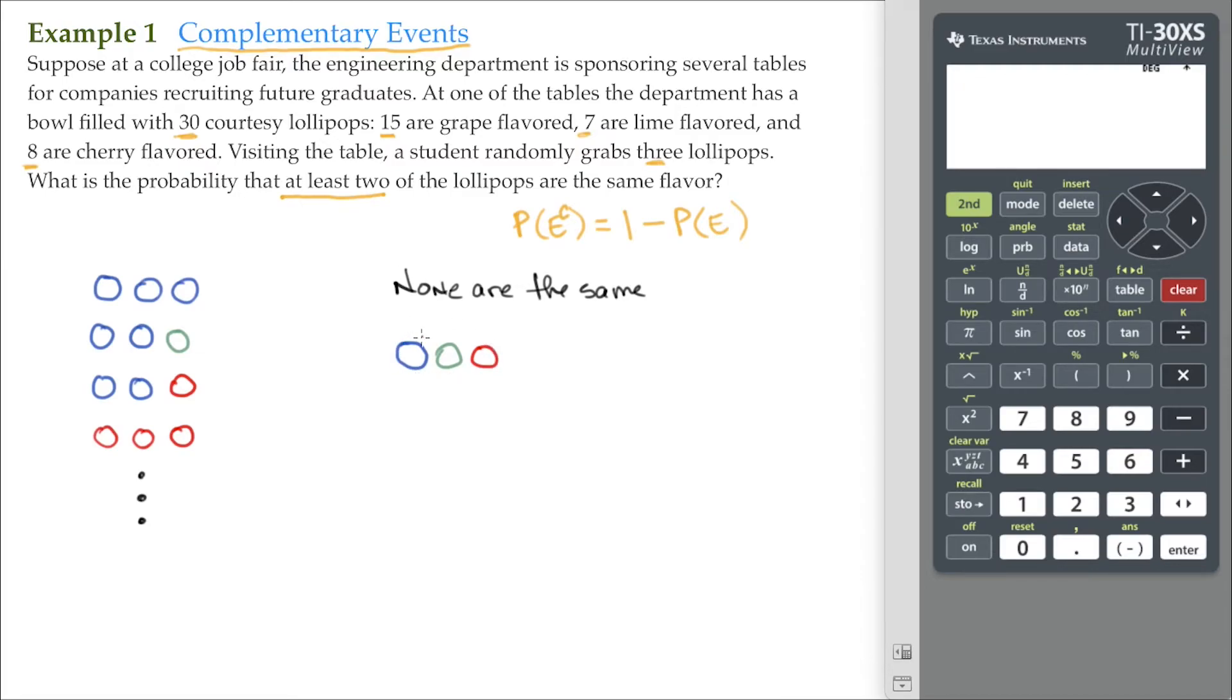Now, don't forget, these are combinations, so the order doesn't matter. But if he grabs three lollipops, there's only one way he can get one of each flavor. That's the complement of this over here. At least two are the same flavor. So rather than determine each possible outcome here for the sample space, we're just going to find this.